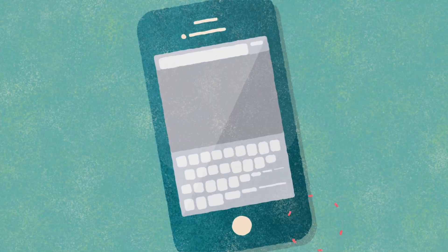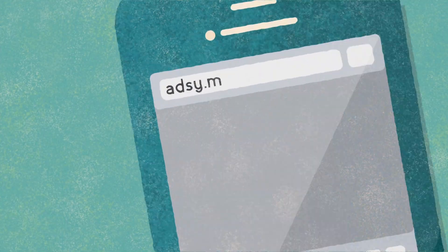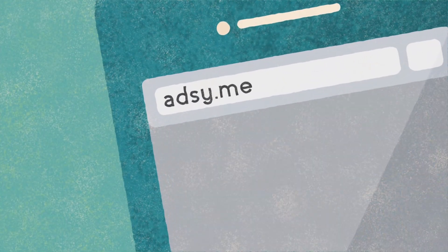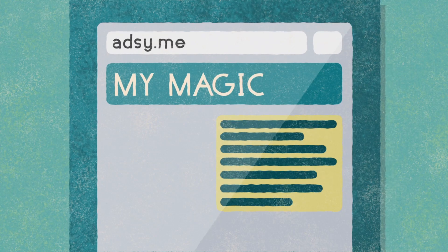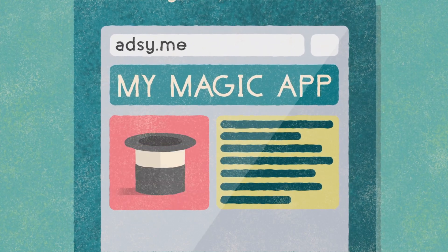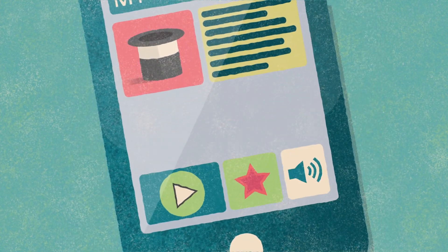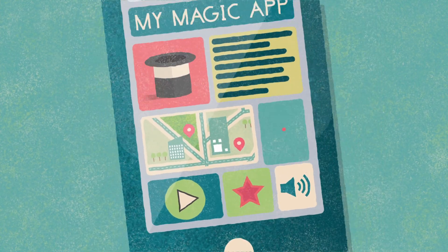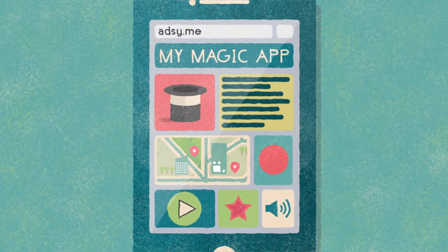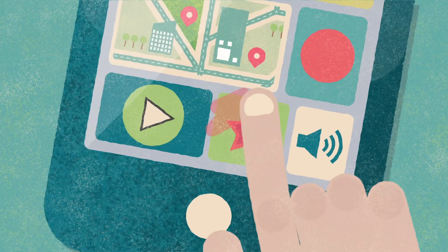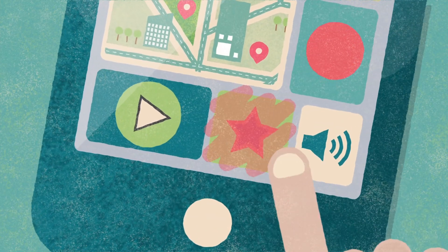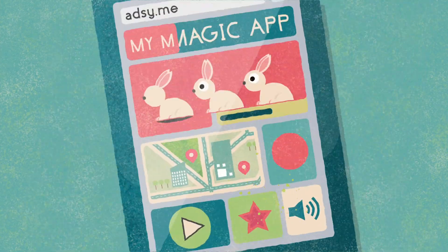Simply type adsy.me into your mobile browser, then add text, pictures, stickers, videos, sounds, maps or other plugins or objects. Paint links between pages using the magic touch button.